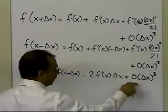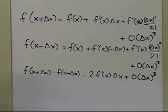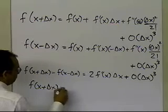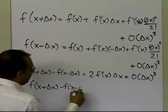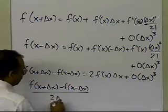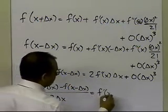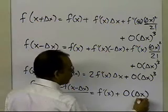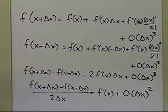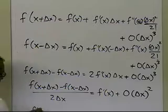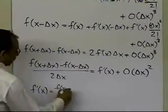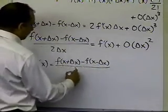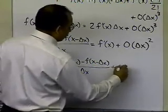So those terms give me another term of order delta x cubed. From here, if I divide by 2 times delta x throughout, I get f of x plus delta x minus f of x minus delta x, divided by 2 times delta x, equal to f prime of x. Since I am dividing by 2 times delta x, the remaining terms are of order delta x squared. So f prime of x equals f of x plus delta x minus f of x minus delta x, divided by 2 times delta x, plus order of delta x squared.